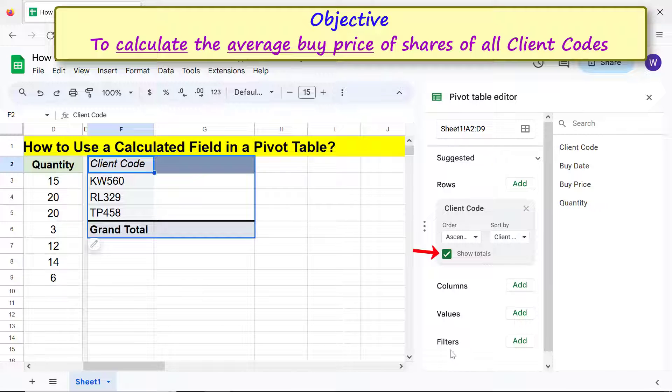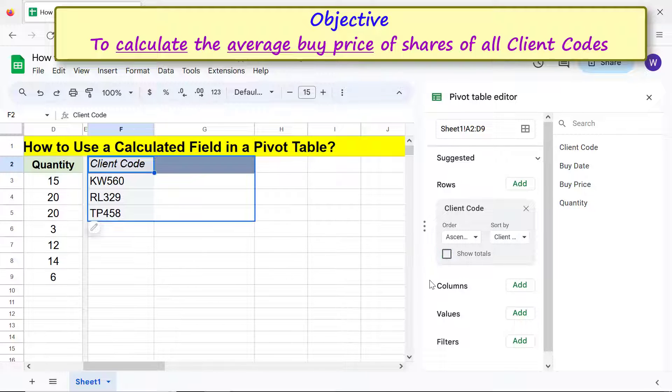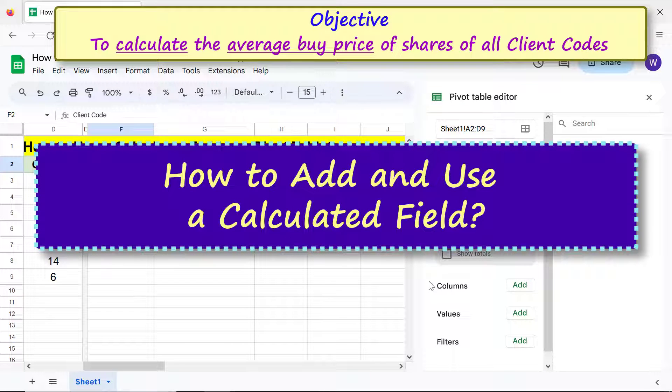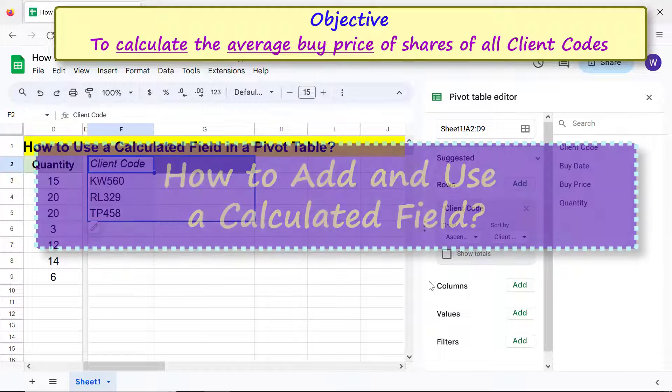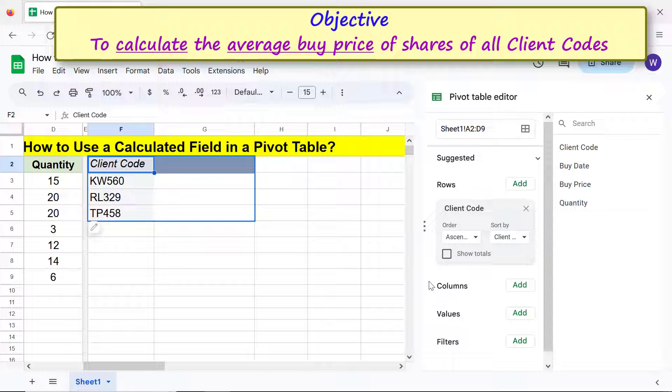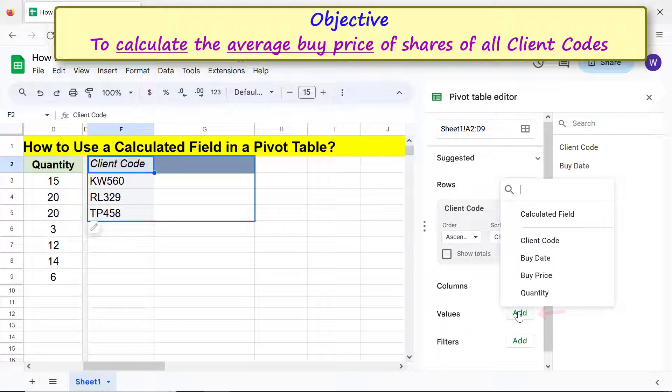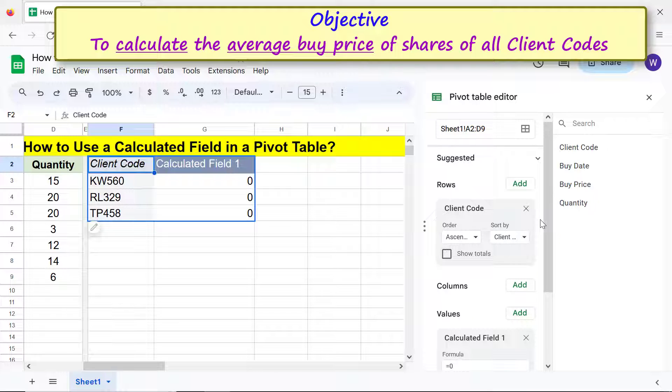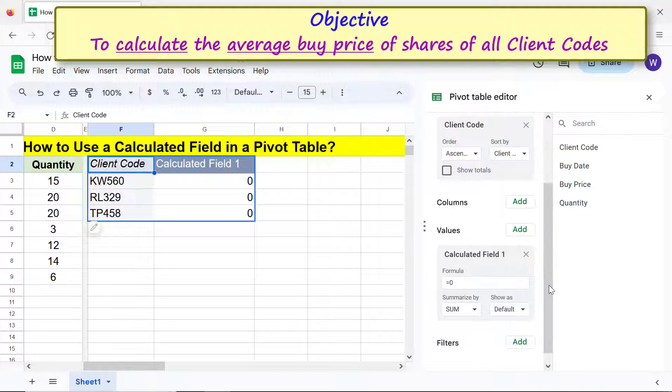Uncheck show totals. How to add and use a calculated field? To add a calculated field to a pivot table, click Add, click Calculated Field. Set summarize by to Custom.